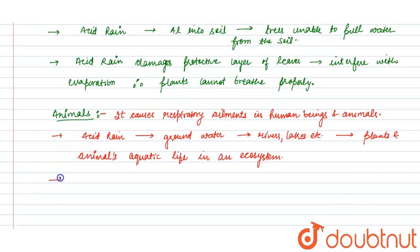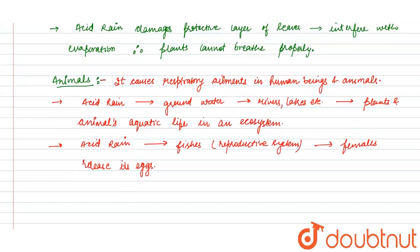When fishes are exposed to acid rain, it affects their reproductive system, and females will not release eggs in acidic water.